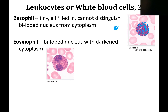Eosinophils have a bi-lobed nucleus — one lobe here, one lobe here. If you look close, you can see there's a connecting piece. They have darker cytoplasm than the neutrophils. Sometimes the lobes can be right next to each other or even on top of each other, so you have to look closely at the cytoplasm.